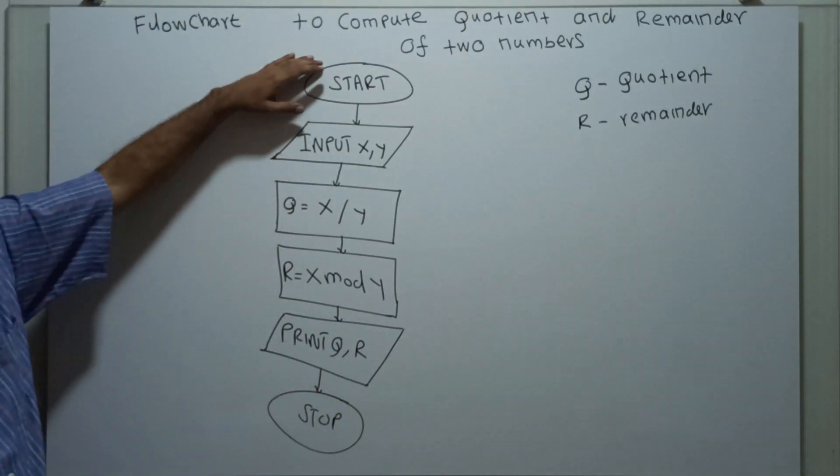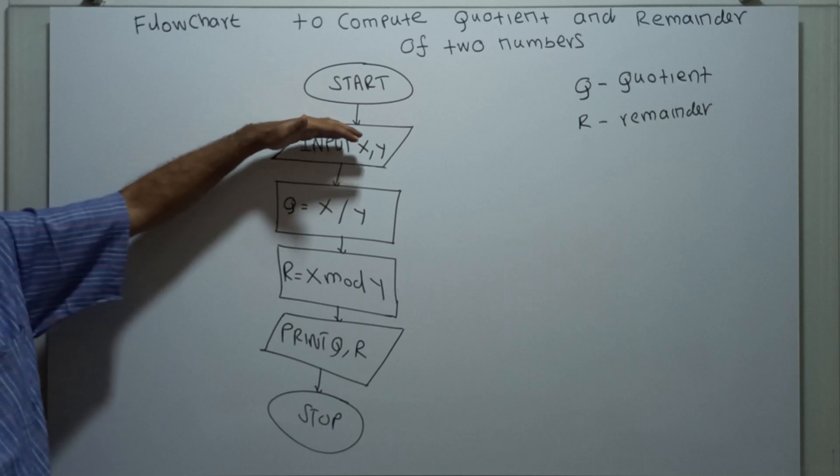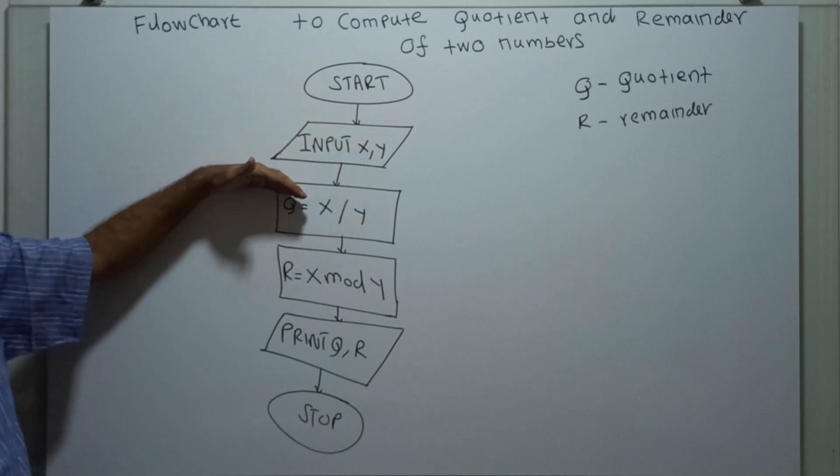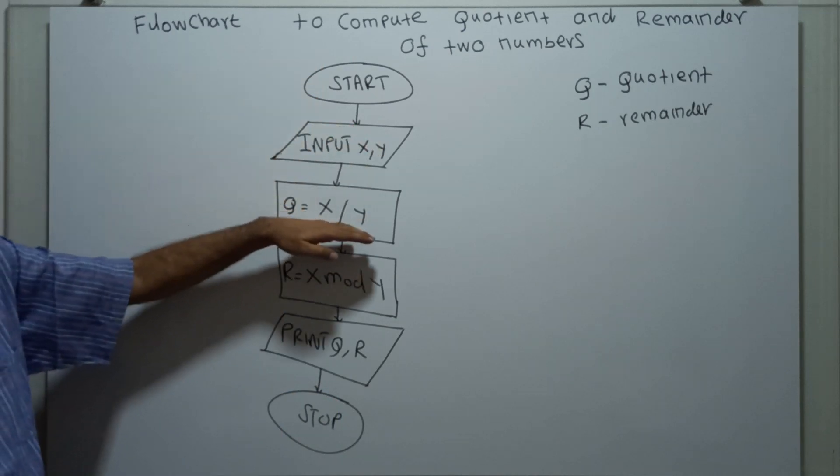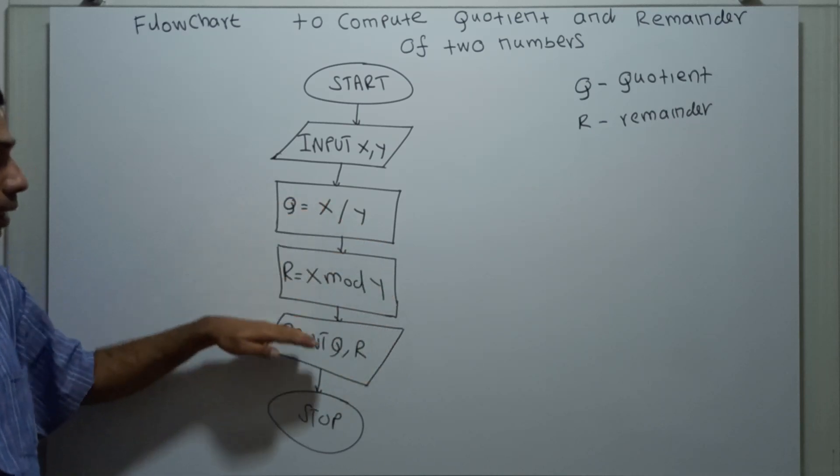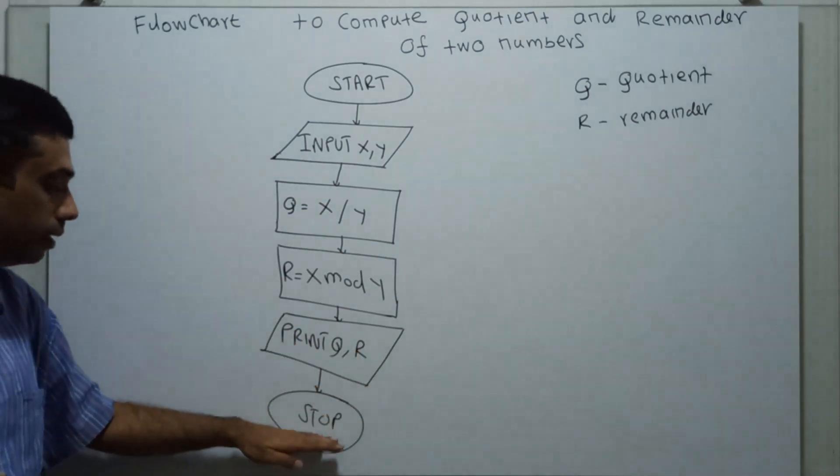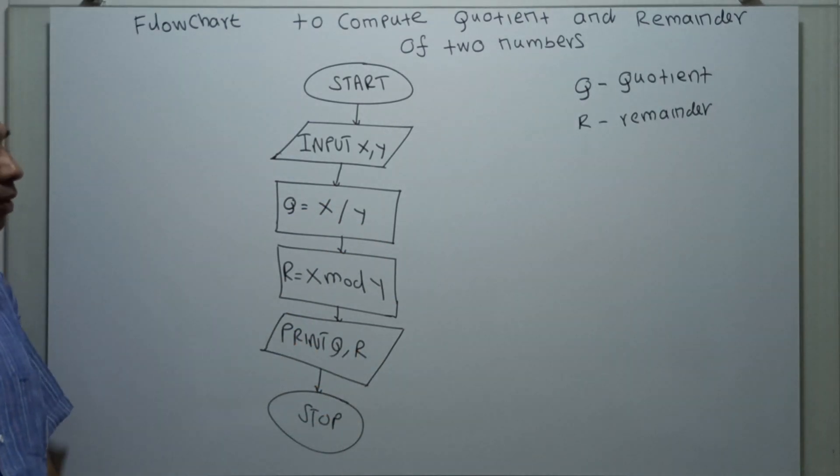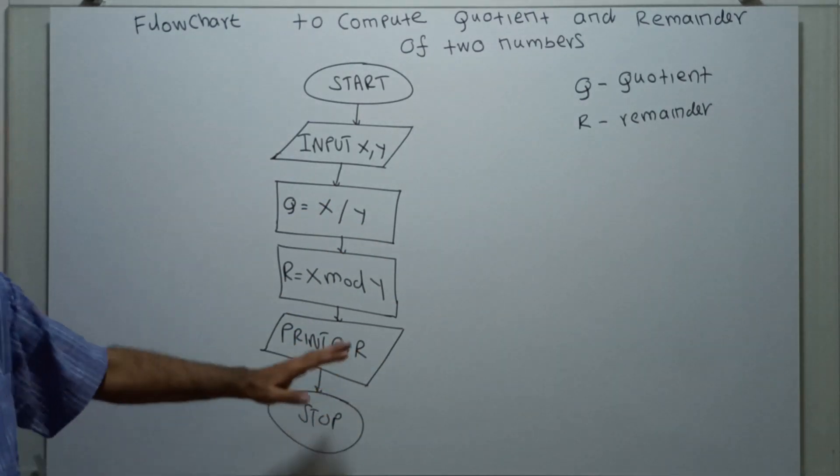So, start of the flowchart. I am obtaining two inputs x, y, the quotient equal to x divided by y, remainder equal to x mod y. I am printing quotient and remainder and this is the logical end of the flowchart. Now we will see an example.